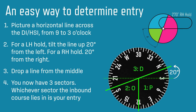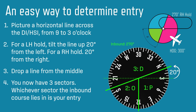Whichever sector the inbound course of your hold lies in is the entry you must fly. Don't forget, if it is close between sectors, you have 5 degrees of leeway either side. In this case, flying a heading of 300 towards the fix, the inbound course of west is at the top of the DI in the direct sector.